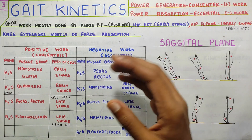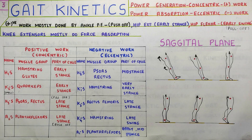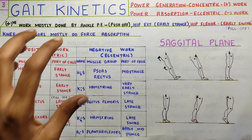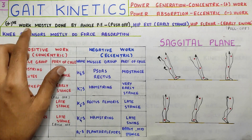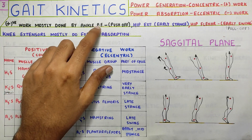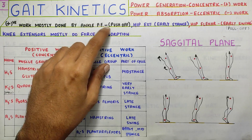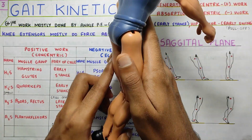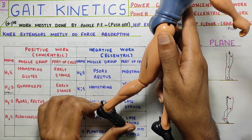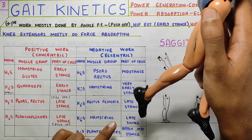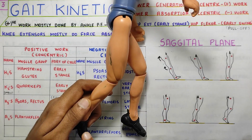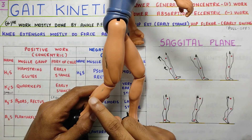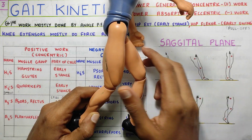The first thing to focus on is positive work or concentric work. The most important concentric work is ankle plantar flexion during the push-off phase. When pushing off from the ground with plantar flexion, that's when the concentric work of the gastrocnemius happens. That is the first and most important positive work seen.